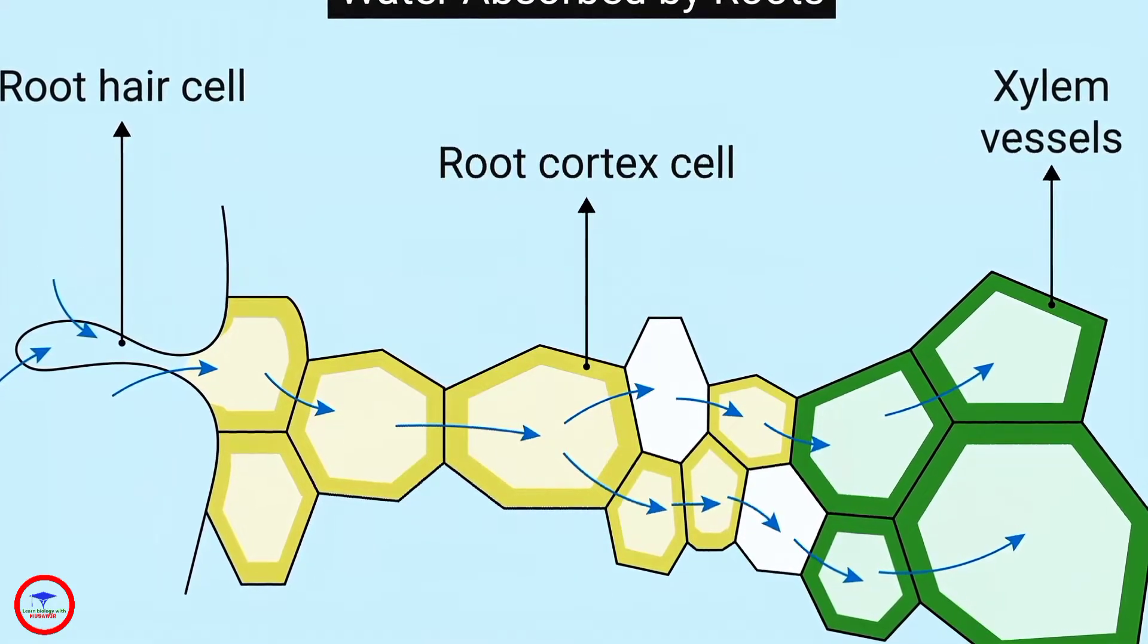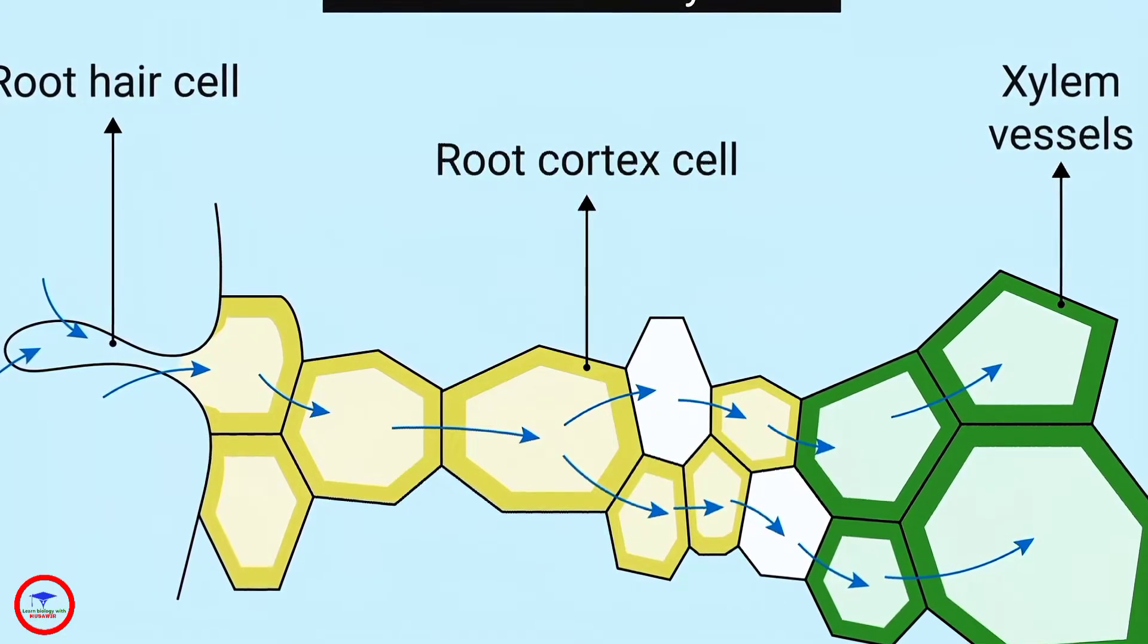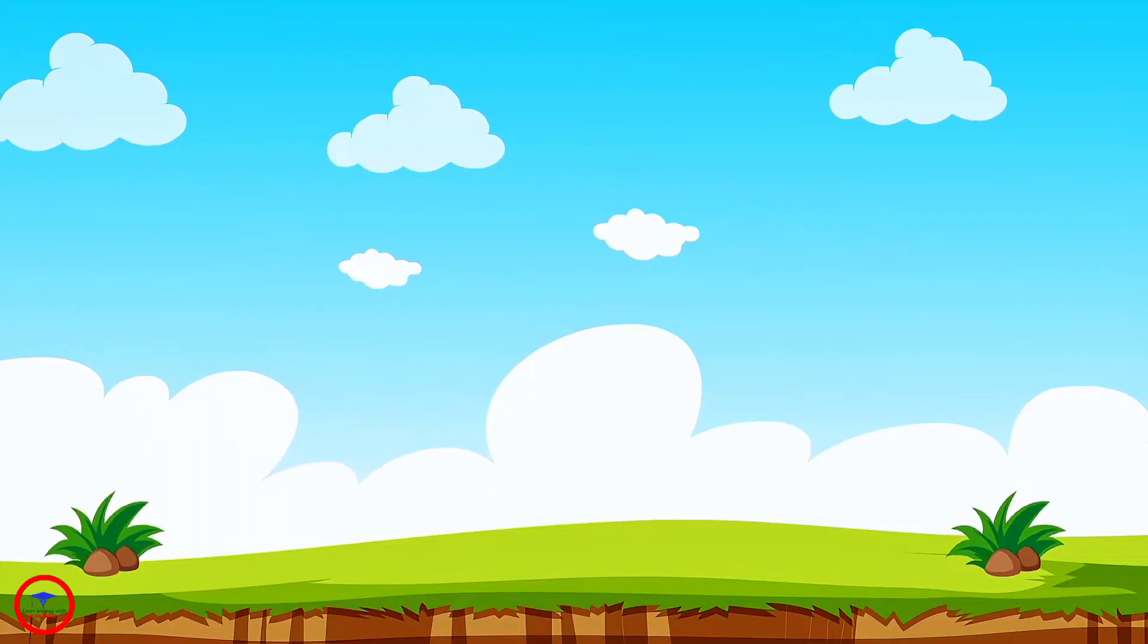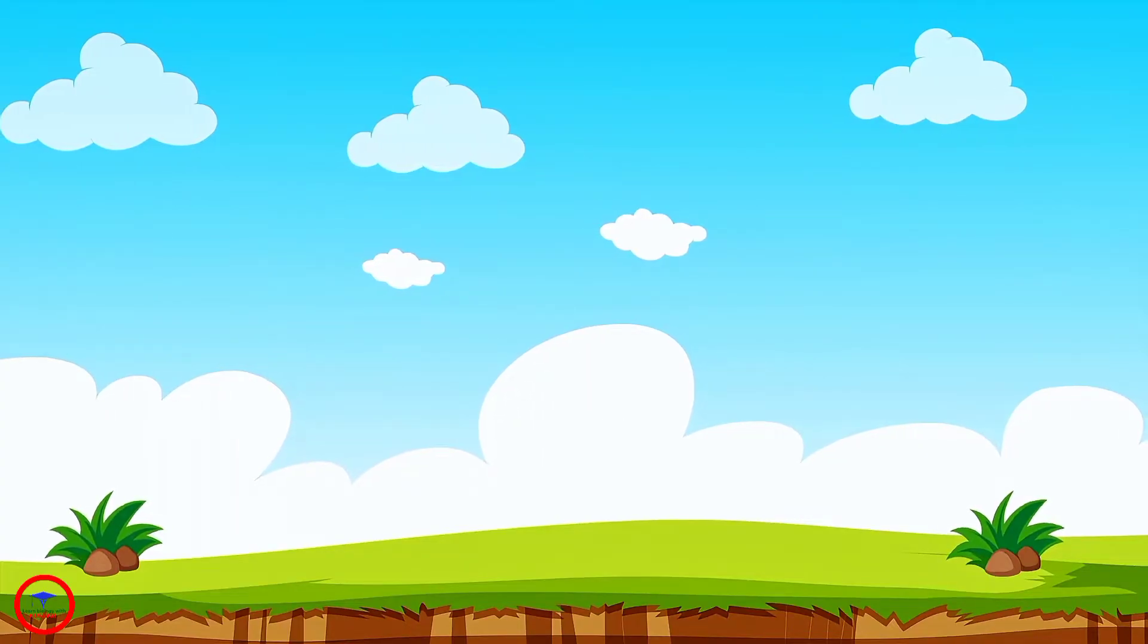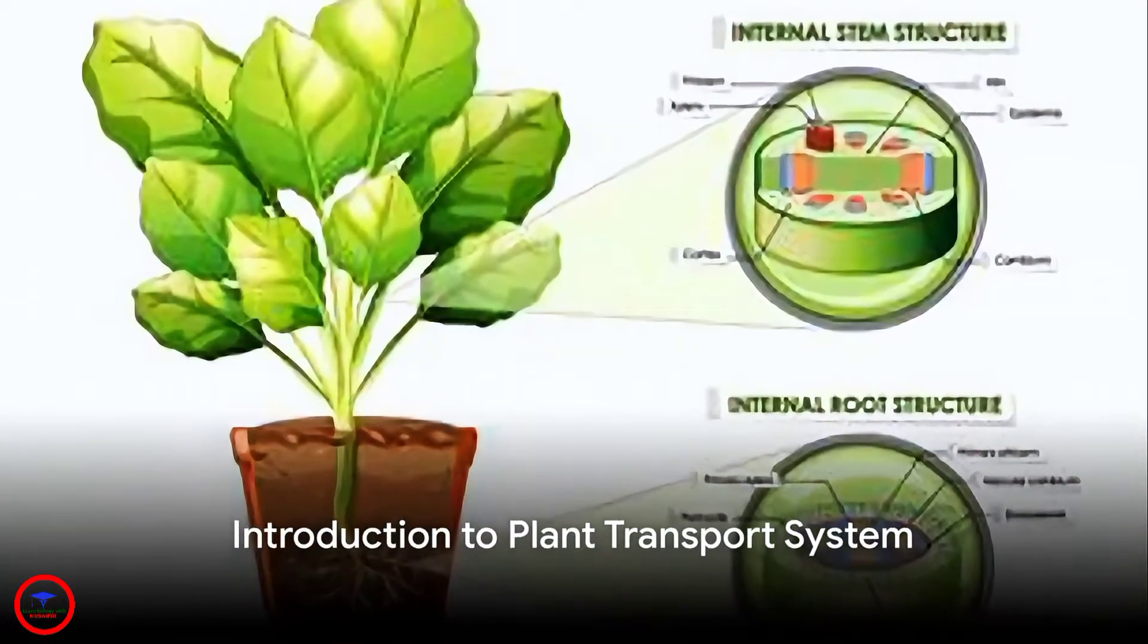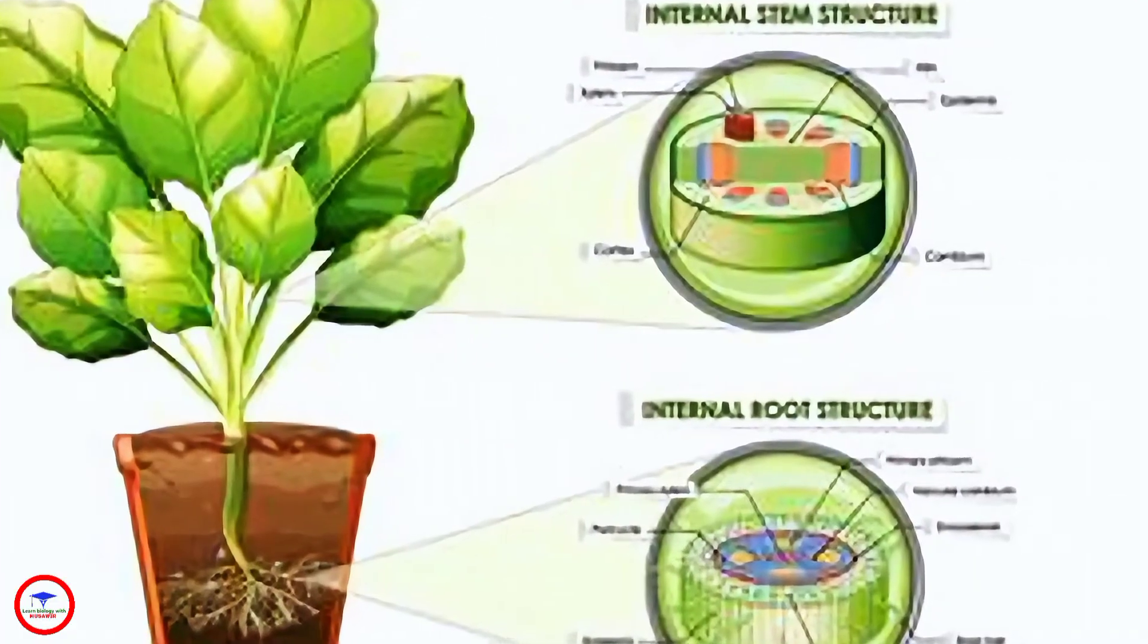Have you ever wondered how plants get their nutrients and water to where they are needed? It's a fascinating process, involving a complex system that's as intricate as the blood vessels in our own bodies. Today, we delve into the world of plant physiology to uncover the secrets of this green machinery.